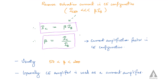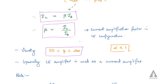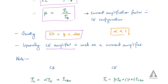The value of alpha is usually less than 1, while the value of beta typically lies between 50 and 200. This means we get a current amplification of at least 50 times. Therefore, the common emitter amplifier is generally used as a current amplifier.